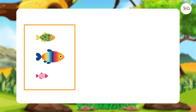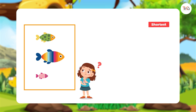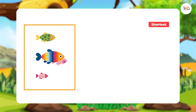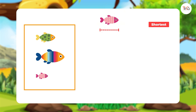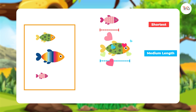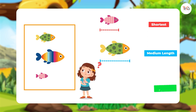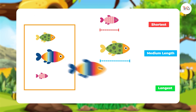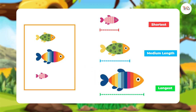Now, can you help me put these three fish in order from shortest to longest? Which fish is the shortest? Did you say this one? Great — put it first. Which fish is medium length? Did you say this one? Brilliant — put it second.